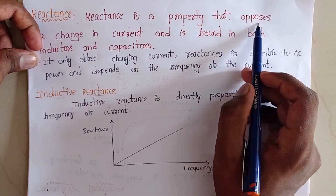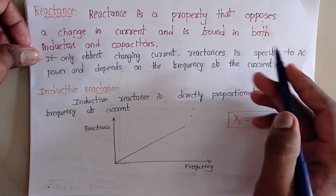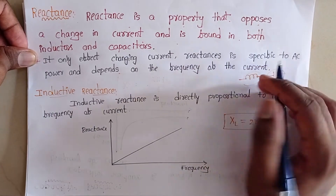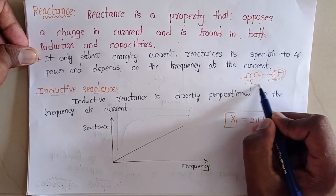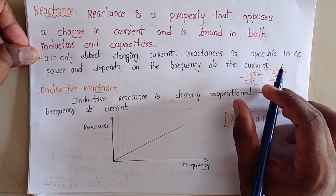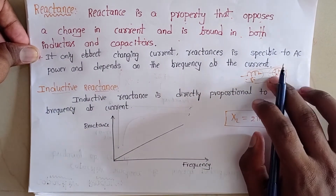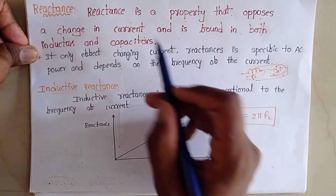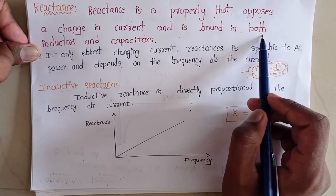Reactance is a property that opposes a change in current and is found in both inductors and capacitors. Inductors and capacitors are current-sensitive elements, which means an inductor opposes the sudden change of current and a capacitor opposes the sudden change of voltage. That is nothing but the reactance — the opposing property of current in inductors and capacitors.